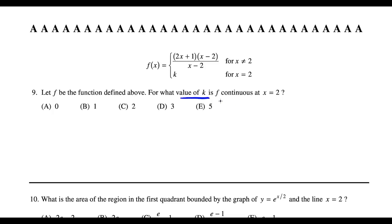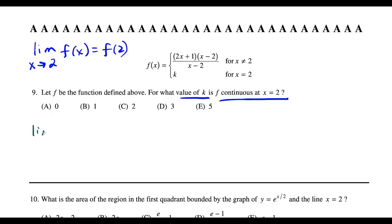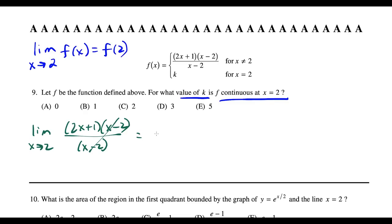Question nine: for what value of k is f continuous at x = 2? Continuity requires the limit as x→2 to equal f(2). Using the non-constant piece of the piecewise function, we cancel (x − 2) and plug in 2 to get 2(2) + 1 = 5. Since f(2) = k, we need k = 5, which is choice E.